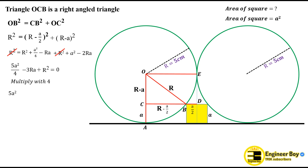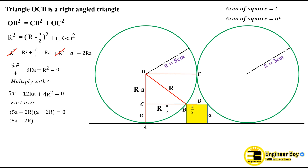Multiplying through by 4 gives 5a² − 12ra + 4r² = 0. We can factorize this as (5a − 2r)(a − 2r) = 0. From a − 2r = 0 we get a = 2r, which is not possible because a must be less than the radius — the square is small. So we discard that solution.